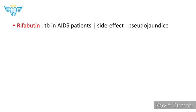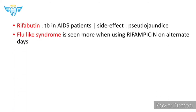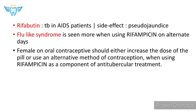Rifabutine is a derivative of rifampicin and is used in tuberculosis in AIDS patients. We don't use rifampicin in such cases because it increases the metabolism of anti-retroviral drugs, so rifabutine is used as a replacement. Its side effects include pseudo-jaundice. Flu-like syndrome is seen more when rifampicin is given on alternative days; if given continuously daily, such symptoms are less.